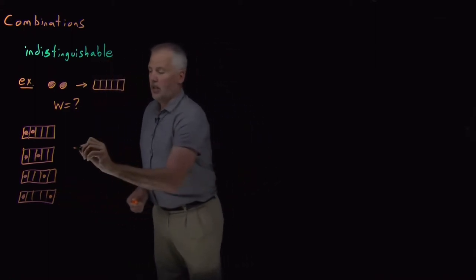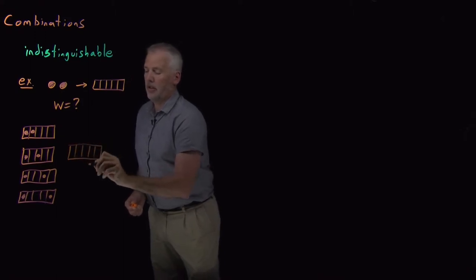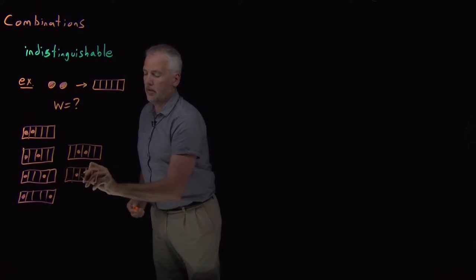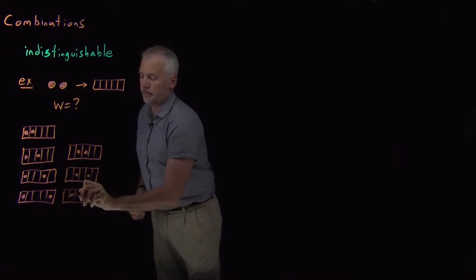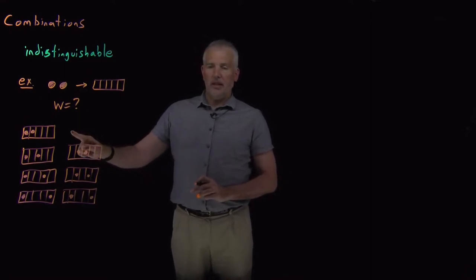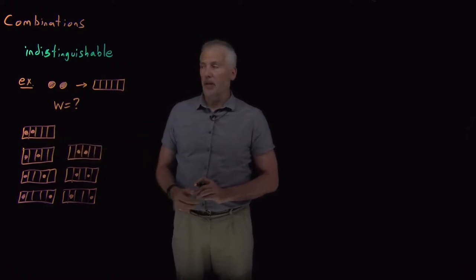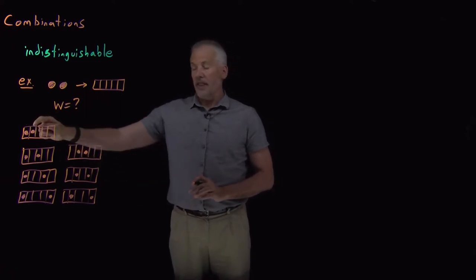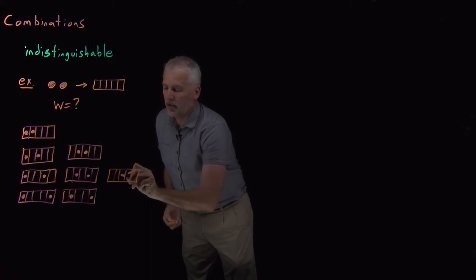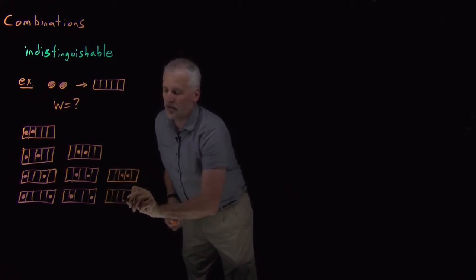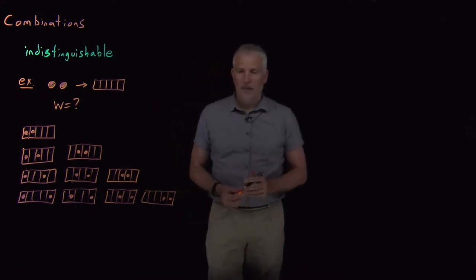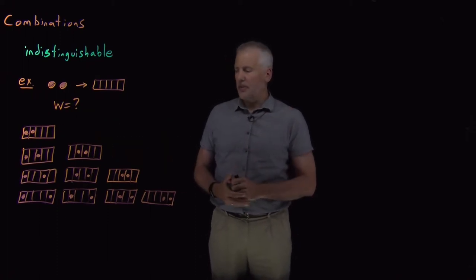I also could have not put the first one into the first box at all, but into the second box, and then put the next one in the third, or the fourth, or the fifth. I didn't write the option of putting the first one in the second box and the second one in the first box, because that gives the same result — these two circles are indistinguishable from one another. I do still have more options: one into the third and one into the fourth; one into the third and one into the fifth; and one into the fourth and one into the fifth. I've tried to be systematic to make sure I haven't forgotten any possibilities.